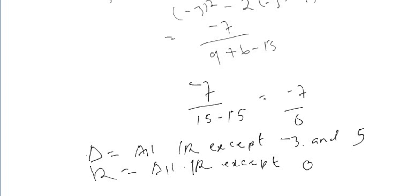The domain is all real numbers except -3 and 5, and the range is all real numbers except zero. Thank you for watching — if you haven't subscribed to the YouTube channel, please do so. Thank you.